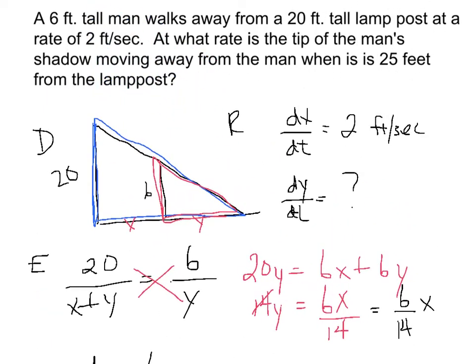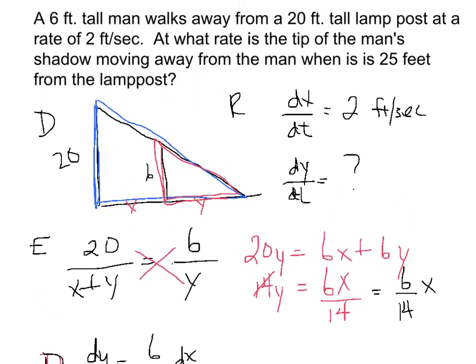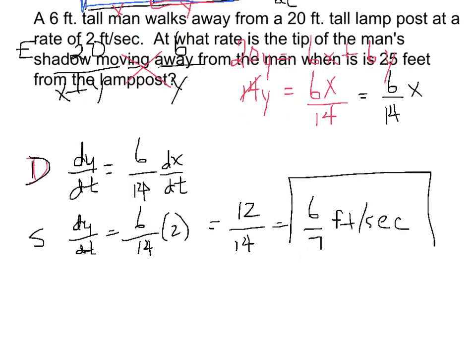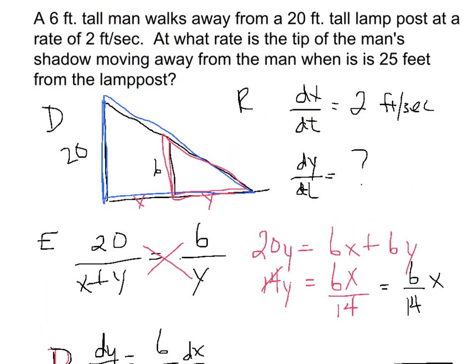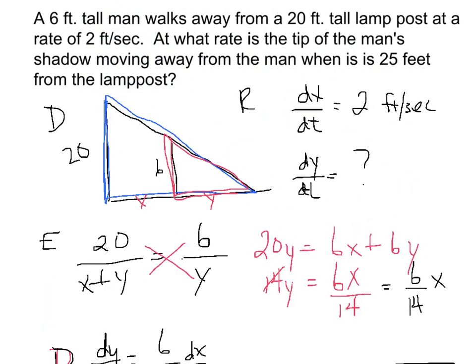If instead it said, how fast is the shadow moving away from the lamp post? Well, we know now it's moving away from the man at a rate of 6/7. We know the man's walking away at 2. We would just add those two together. So it would be 2 and 6/7 is how fast it's moving away from the lamppost.